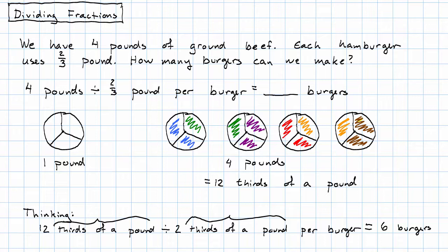Right? We can get six groups, each of which consists of two thirds of a pound.